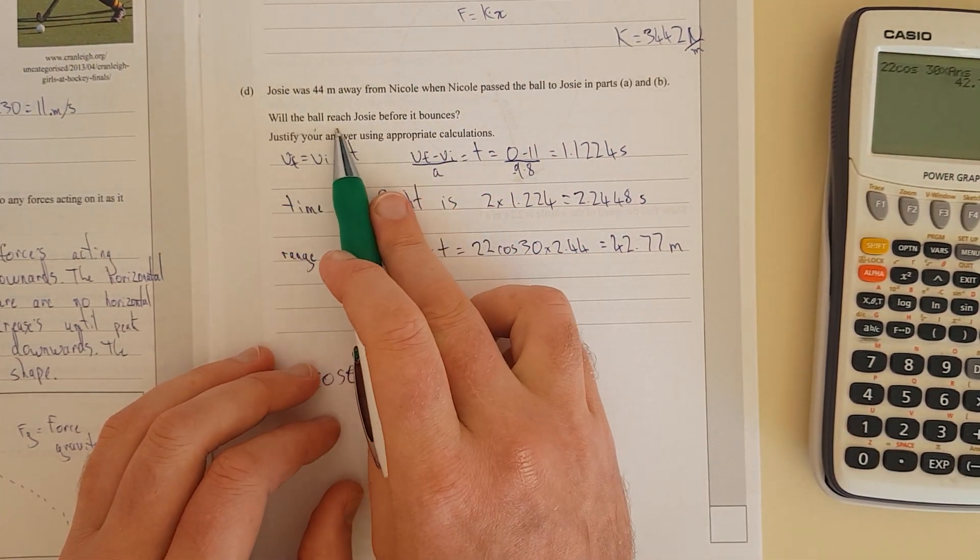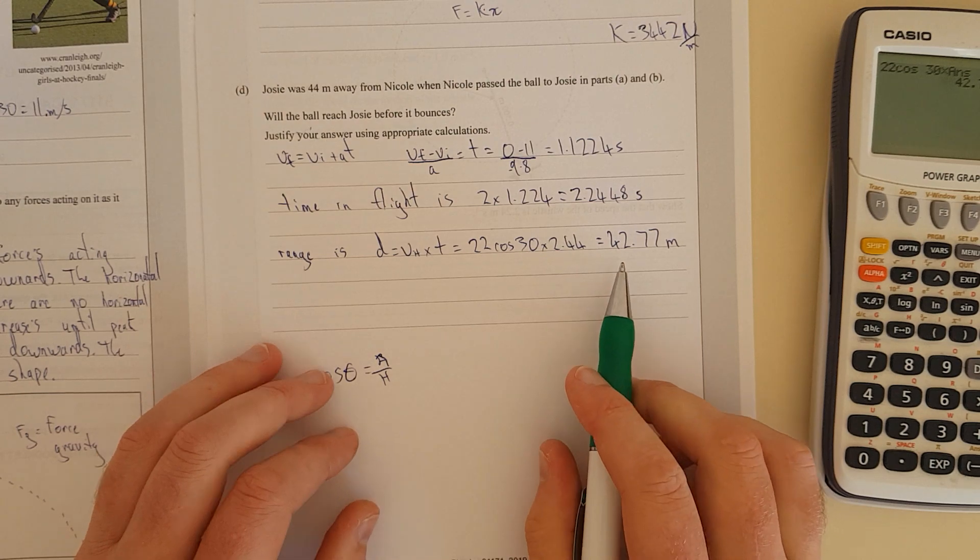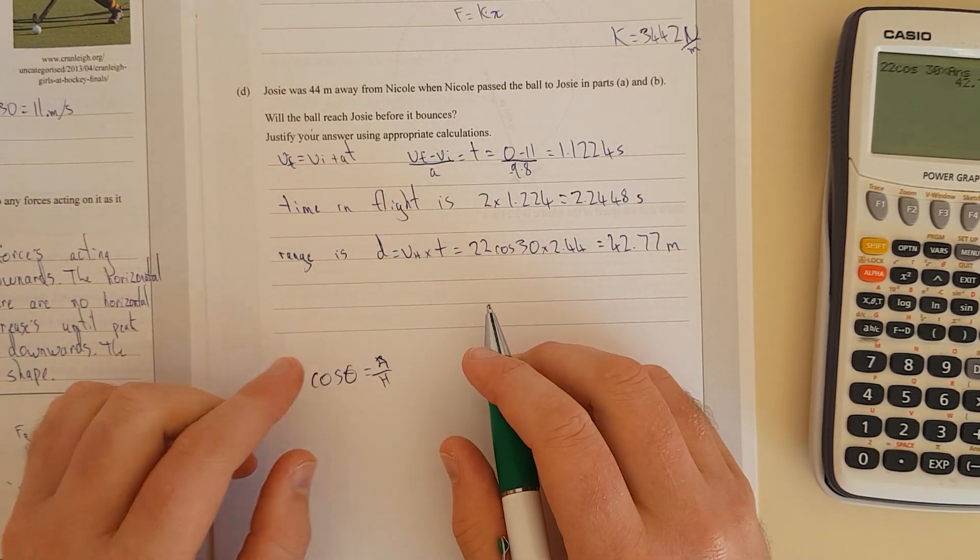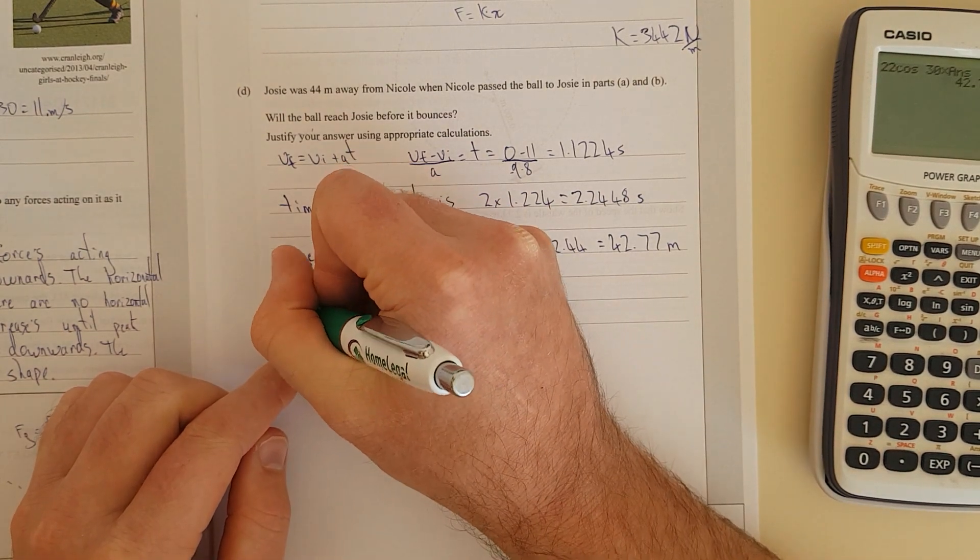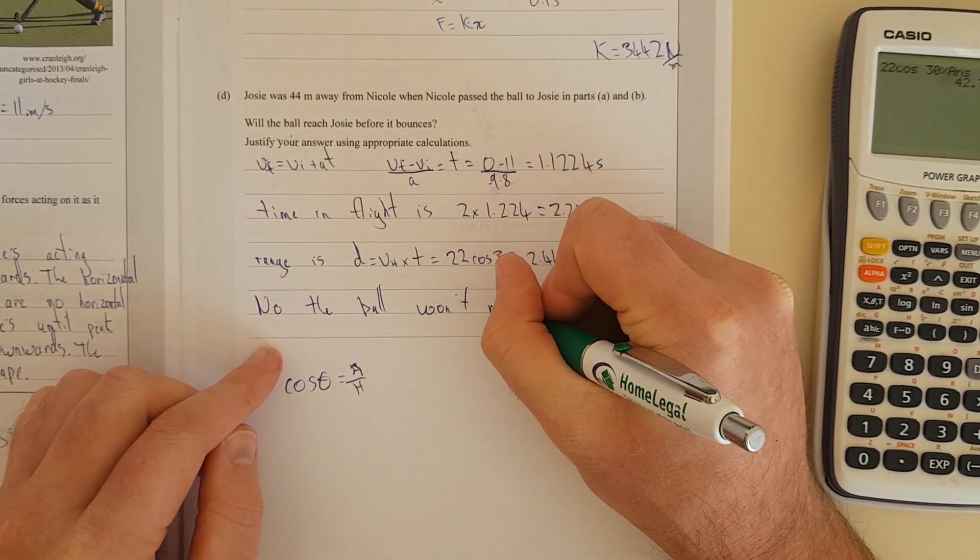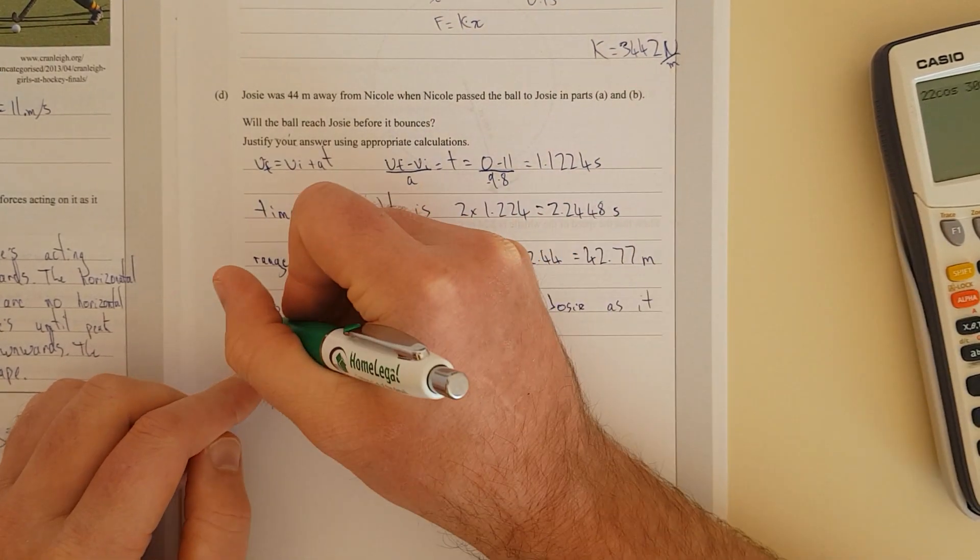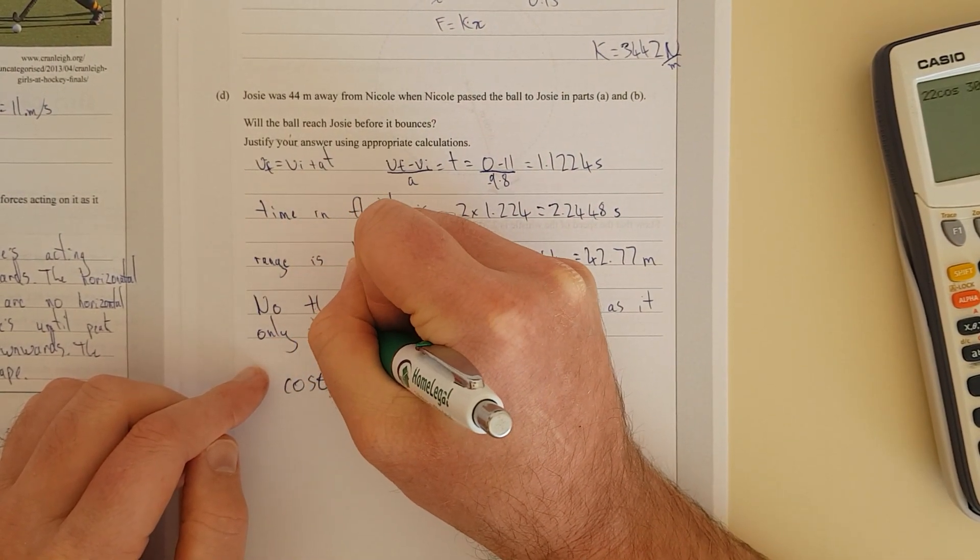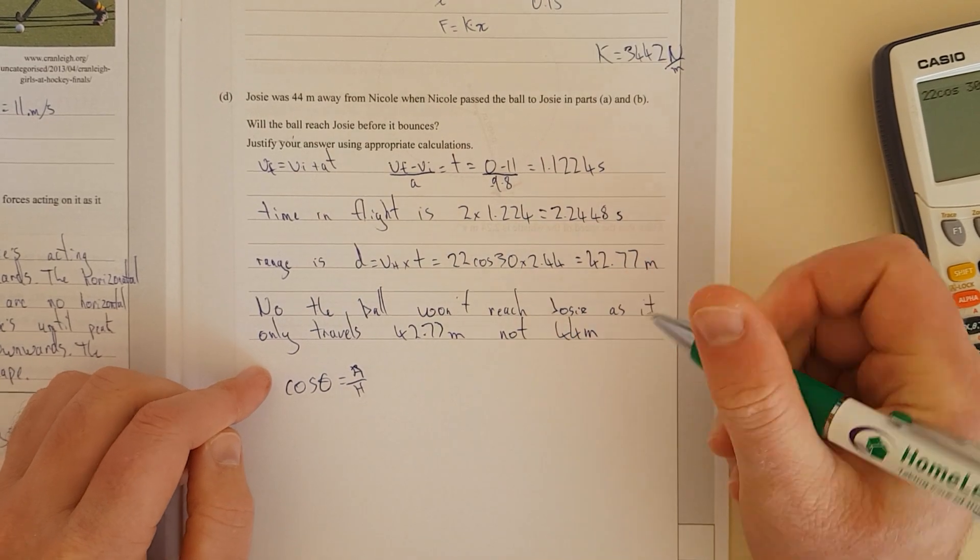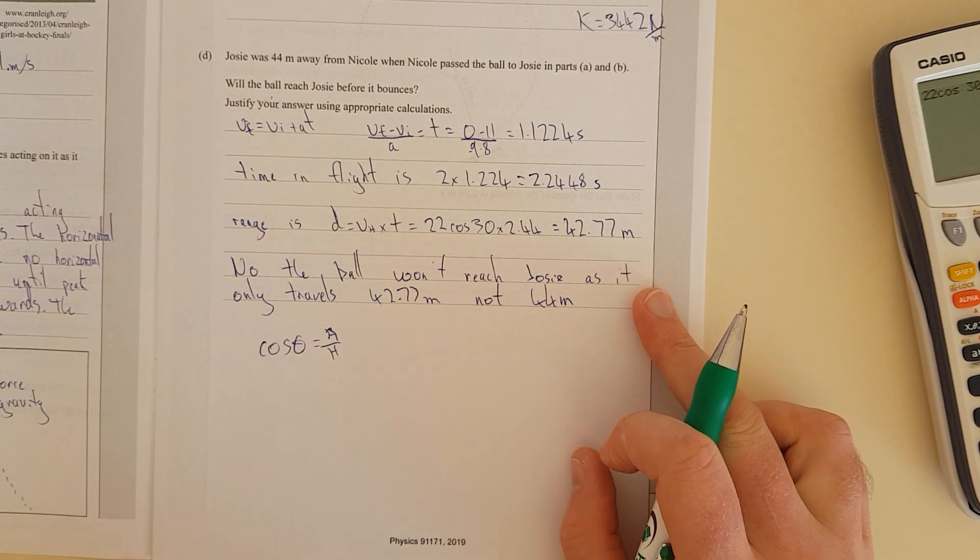Now you need to answer the actual question. Will the ball reach Josie before it bounces? She's 44 meters away. No, which is actually really surprising because this is the first time it's ever in any of these exams that it's come short. So no, the ball won't reach Josie as it only travels 42.77 meters, not 44 meters. Pretty sure if you don't have this part you only get merit - actually answering it gives you the excellence.